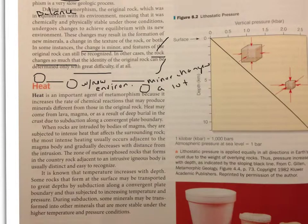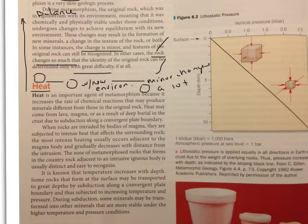I see this next section is titled Heat. I remember heat was mentioned above as one of the three principal agents of metamorphism. Go ahead and just kind of underline that, put a line to the top, kind of an arrow, indicating that it was mentioned above. Heat is an important agent of metamorphism because it increases the rate of chemical reactions that may produce minerals different from those in the original rock. Heat may come from lava, magma, or as a result of deep burial in the crust due to subduction.